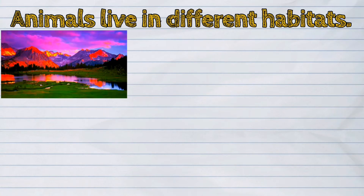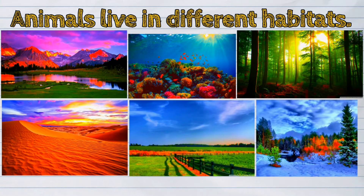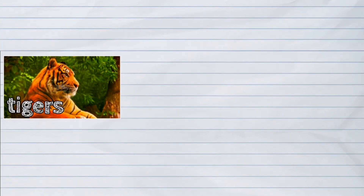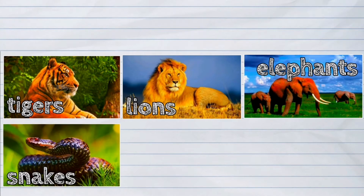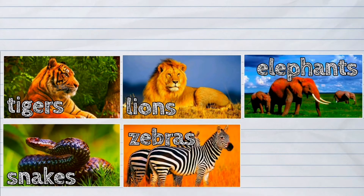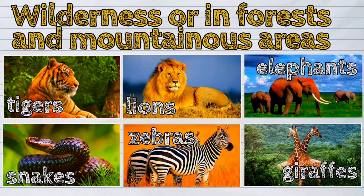Animals live in different habitats. Some animals like tigers, lions, elephants, snakes, zebras, and giraffes live in the wilderness or in forests and mountainous areas. They are called wild animals.